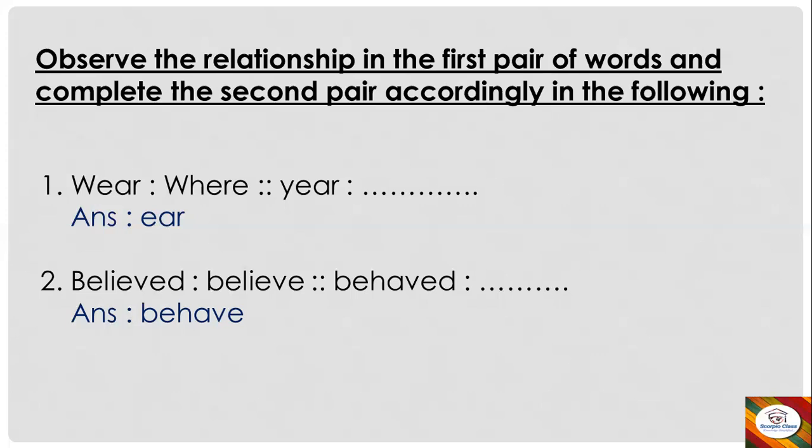Similarly, the second pair: 'ear' — the homophone of 'ear' the body part (E-A-R, the human body part from which you hear) is 'year' — 12 months make a year. So the answer is: 'where' is to 'wear' as 'year' is to 'ear'.